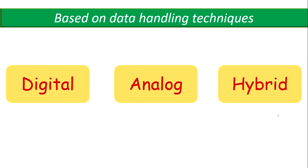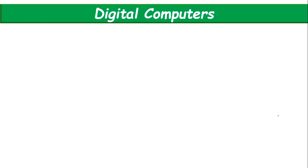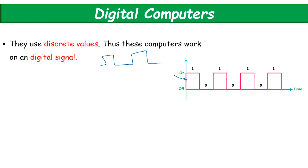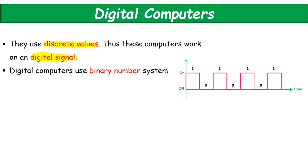First of all, let's see based on data handling techniques. There are three types: digital, analog, and hybrid computer. First is digital computer. Digital means we will have discrete values. You know what a digital signal is — either you have zero value or one. Digital computers use discrete values; this is the most important point. We are working on digital signals rather than analog signals. Digital computers use the binary number system, that is either zero or one.